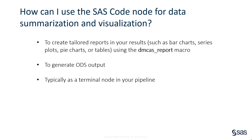The third use case is using the SAS Code node for data summarization and visualization. You can use your favorite SAS procedures to create ODS output or use the DMCASReport macro to create your own plots of data in the pipeline. This macro enables you to create tailored reports in your results such as bar charts, series plots, pie charts, scatter plots, and tables. In this case, the SAS Code node will typically be a terminal node in your pipeline since it's not creating any scoring code or changing metadata.